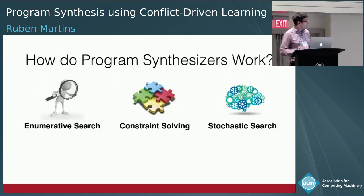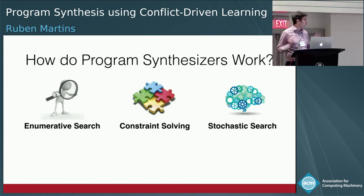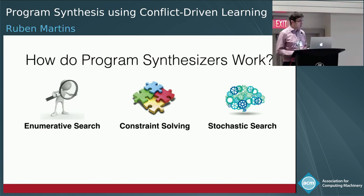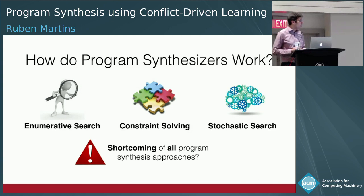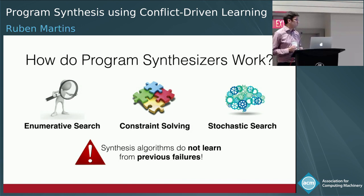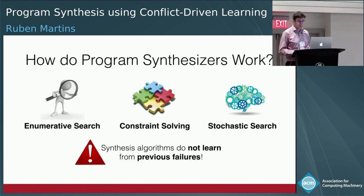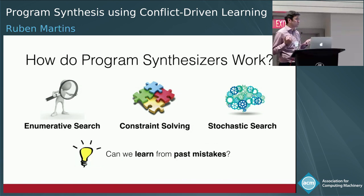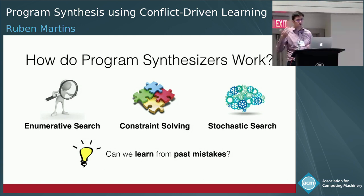Even though there's a lot of work in program synthesis, you can cluster it into three main approaches: enumerative search, constraint solving, and stochastic search. However, all these approaches have a common shortcoming — they are not able to learn from previous failures. If you reach a state where you know there's no solution, you can't learn from it. Our question is: can we learn from these past mistakes and use that information to avoid making the same type of mistake over and over again?